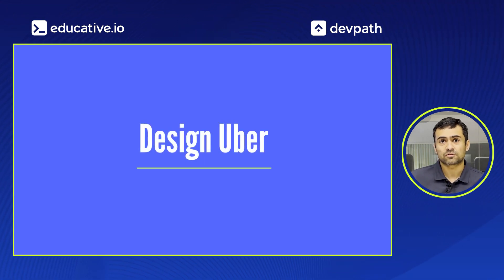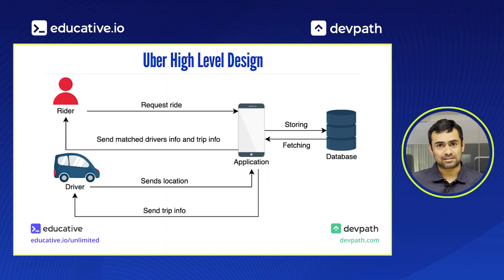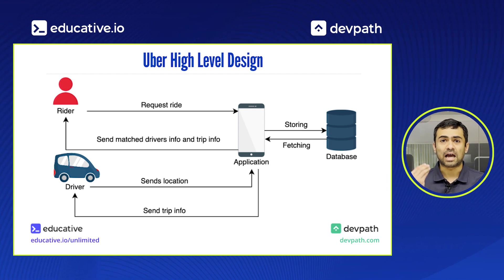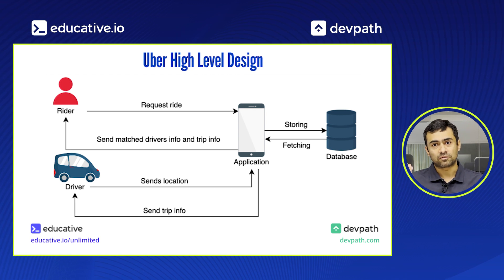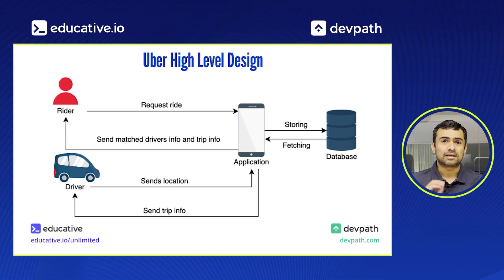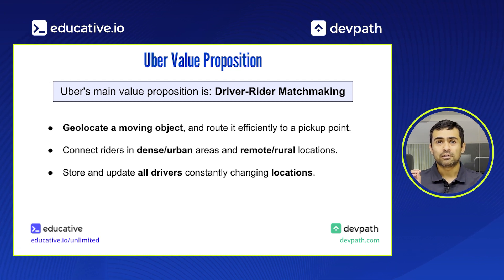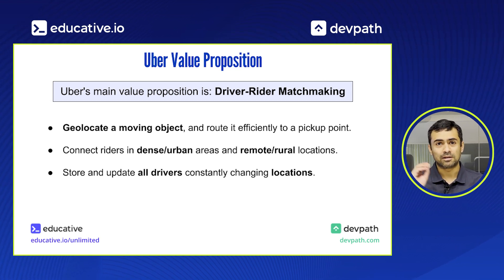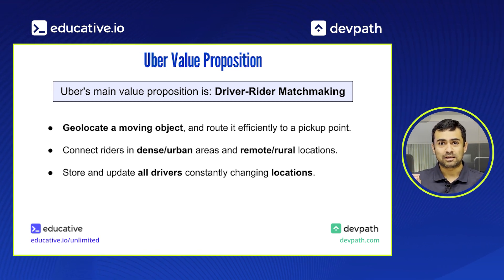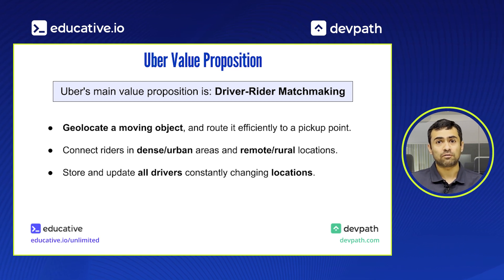One great question frequently asked in system design interviews is designing Uber. In the detailed design, we have to understand what is the key value proposition that Uber is providing to its customers, and that would guide us on how to configure the building blocks to suffice all the requirements. If you think about it, the most critical thing in designing Uber is how to efficiently match a rider to a driver.